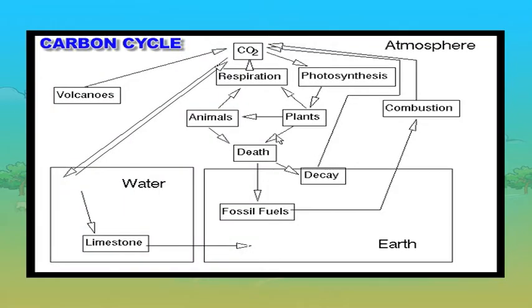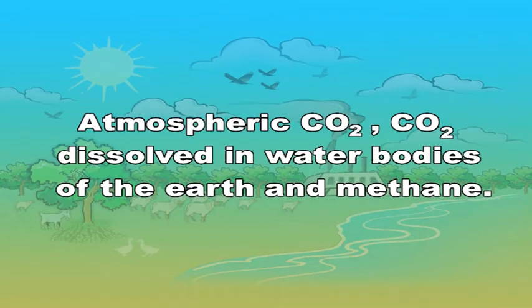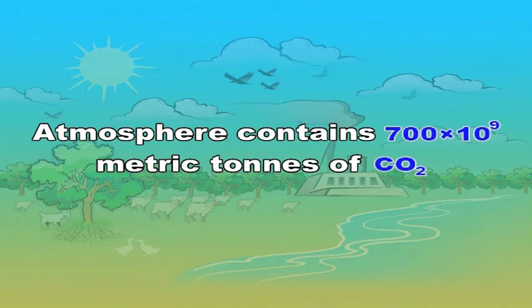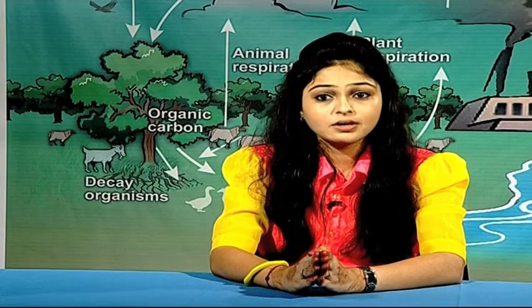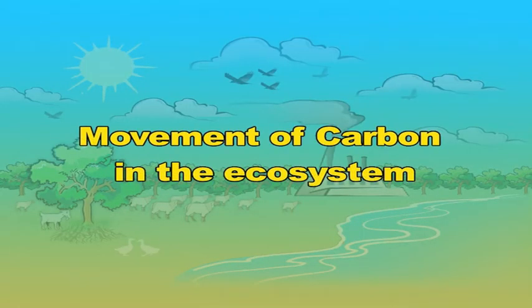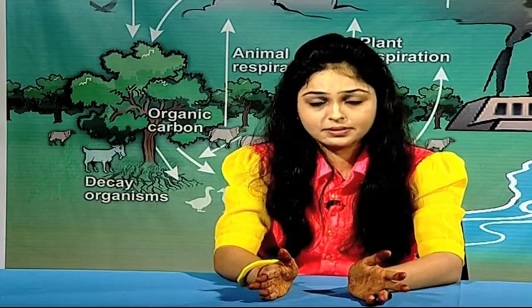The carbon cycle is the biogeochemical cycle by which carbon is exchanged among the biosphere, pedosphere, geosphere, hydrosphere and atmosphere of earth. The major source of carbon is atmospheric CO2, CO2 dissolved in water bodies and methane. The atmosphere contains 700 × 10⁹ metric tons of carbon dioxide. On average, there is about 6 tons of carbon as CO2 over each acre of earth. Photosynthesis and respiration are the two main biological processes accounting for biological cycling of carbon dioxide in the atmosphere.